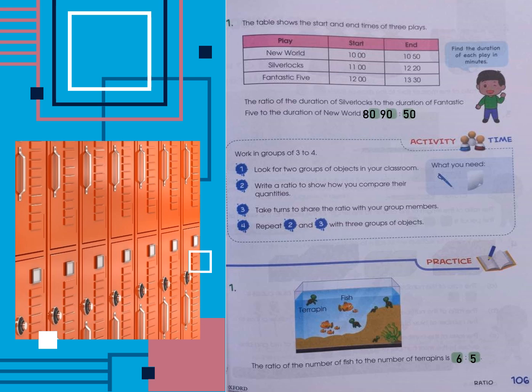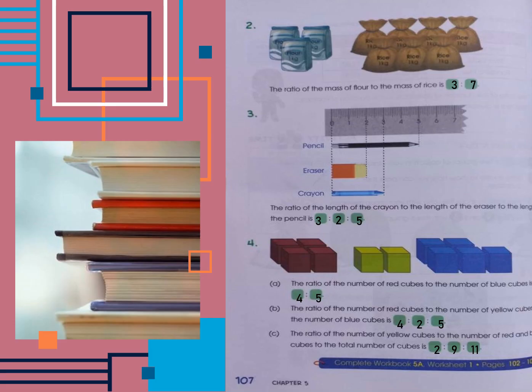Now for the practice questions. In question one, we have an aquarium and we need to find the ratio of the number of fish to the number of terrapins, which is six to five because there are six fish and five terrapins. In question two, the ratio of the mass of flour to the mass of rice is three to seven, because there are three packs of flour and seven packs of rice, each weighing one kilogram, so the units are the same.